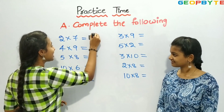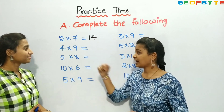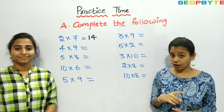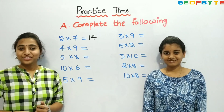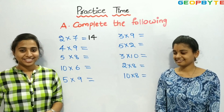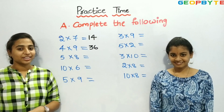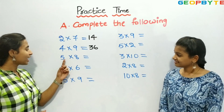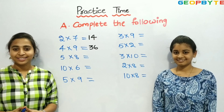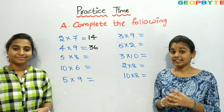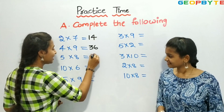Let us write 14. Now, let us see the next one: 4 into 9, or 4 times 9. What is the answer? Yes, 4 nines are 36. Let us write 36. Now let us see the next one: 5 into 8, or 5 times 8. What is the answer? 5 into 8 is equal to 40. Yes, 5 eights are 40. Let us write 40.